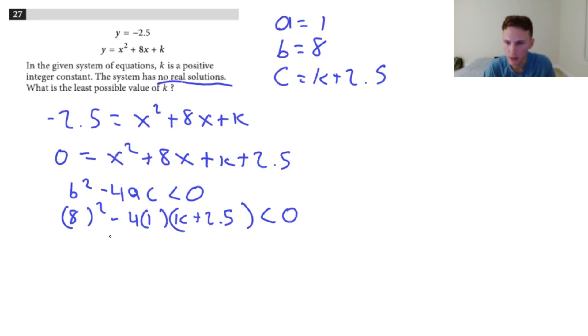So then now we just have to solve for k. So 64 minus 4 times k plus 2.5, and then we're going to subtract the 64 over to the other side. So this will be negative 4 times k plus 2.5 is less than negative 64. Divide by negative 4 on both sides, so that'll be k plus 2.5 is greater than 16. Whenever you divide by a negative number in an inequality, you have to flip the sign, so don't forget about that.